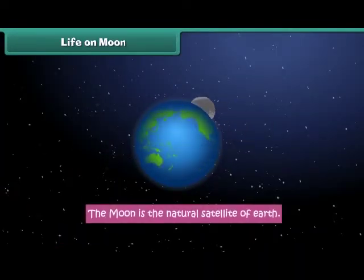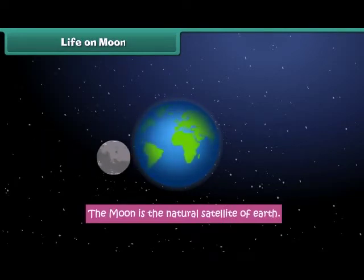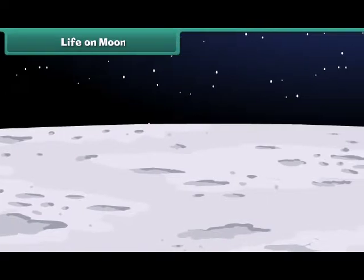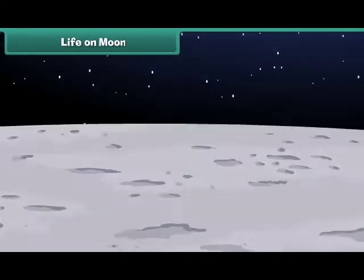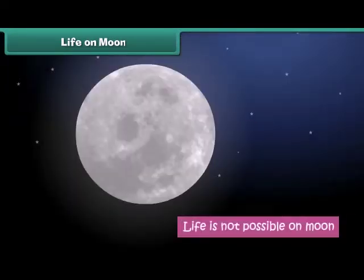Though Moon is the natural satellite of Earth, it is very different from Earth. There is no air, water or food on the Moon. Therefore, life is not possible on it.